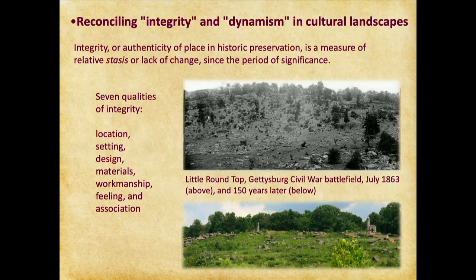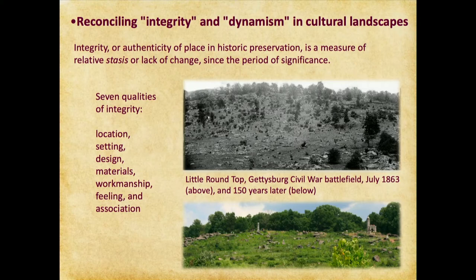Reconciling integrity and dynamism in cultural landscapes. We have a conundrum in that integrity or authenticity of place in historic preservation is a measure of relative stasis or lack of change since a period of significance. With integrity, we look at seven qualities of integrity that most of you would have heard of. But really, we're looking for the landscape to have not significantly changed since a period of significance in order to have integrity.